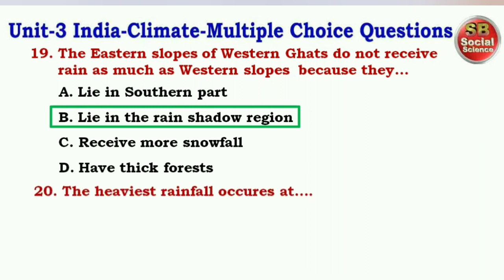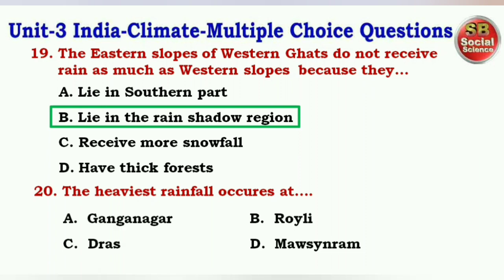Next question: The heaviest rainfall occurs at — options are Ganganagar, Ruili, Drass, Mawsynram. The right answer is option D — Mawsynram.